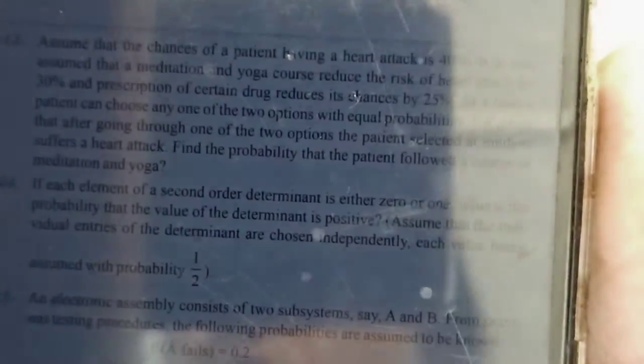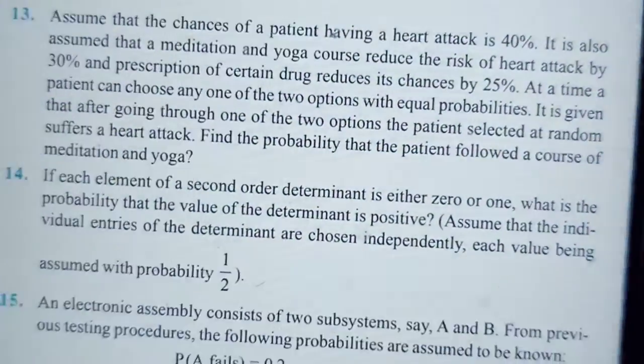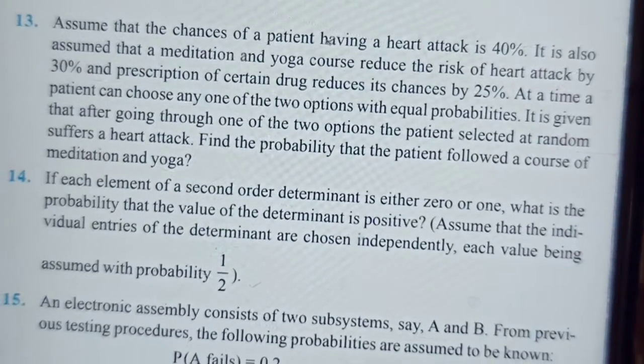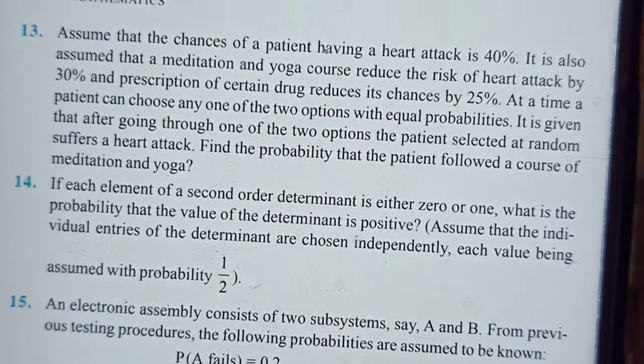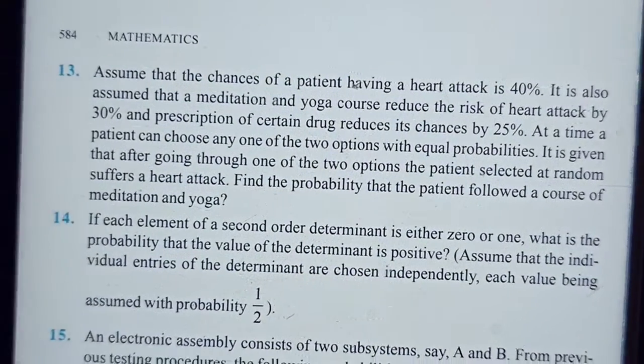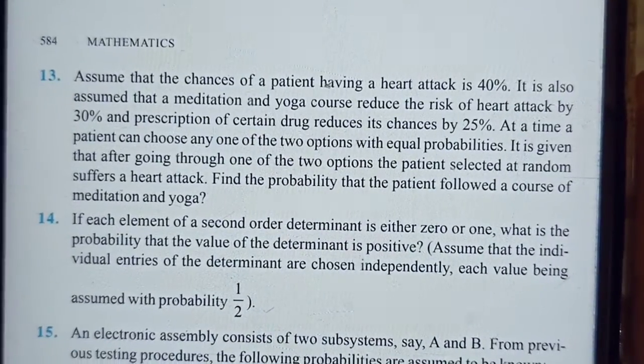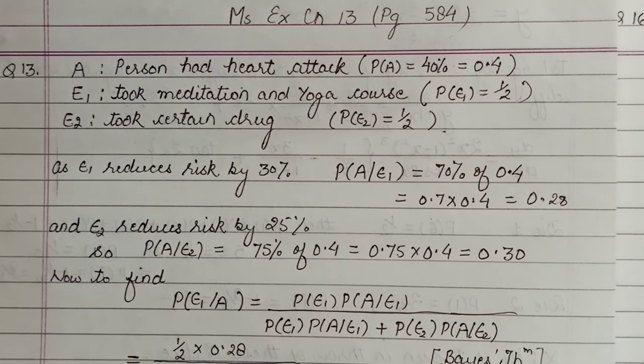So it is given that after going through one of the two options, the patient selected at random would suffer from a heart attack. You have to find the probability that the patient followed the course of meditation and yoga. Okay, now you need to understand the question first - what all is given to you.